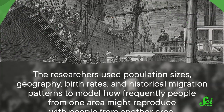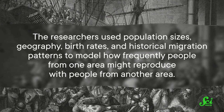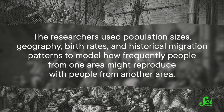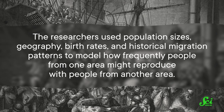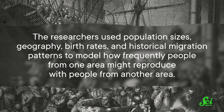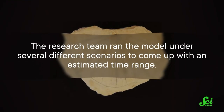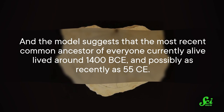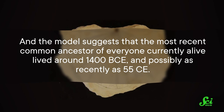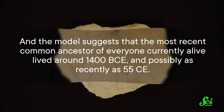In 2004, researchers tried to do just that. They used population sizes, geography, birth rates, and historical migration patterns to model how frequently people from one area might reproduce with people from another area. These are estimates about human populations living hundreds or even thousands of years ago, so it's tough to model these trends with complete certainty. The research team ran the model under several different scenarios to come up with an estimated time range. The model suggests that the most recent common ancestor of everyone currently alive lived around 1400 BCE, and possibly as recently as 55 CE.